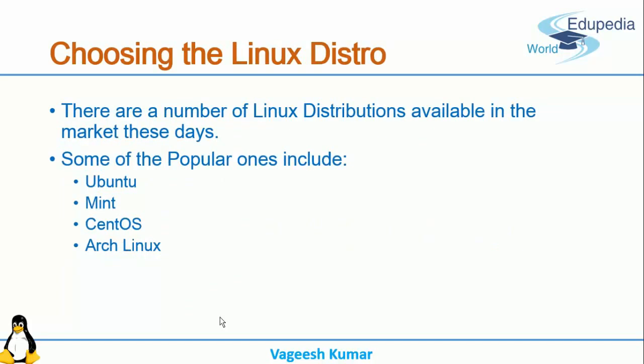Now we need to choose the Linux distribution, or Linux distro. There are a number of Linux distributions available in the market these days. Most of them are free to use, and some popular ones include Ubuntu, MintOS, CentOS, and ArchLinux. Ubuntu is a Debian-based Linux, Mint is also Debian-based, and CentOS is an RPM or Red Hat-based Linux.